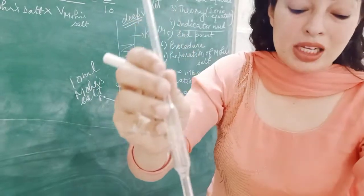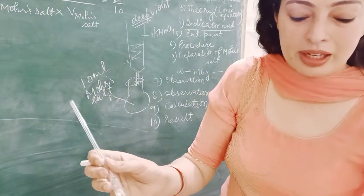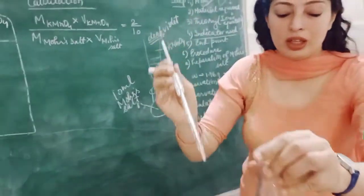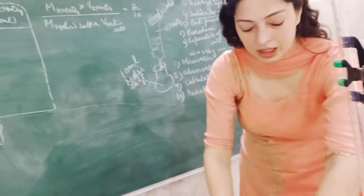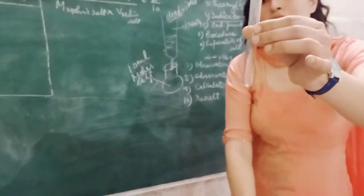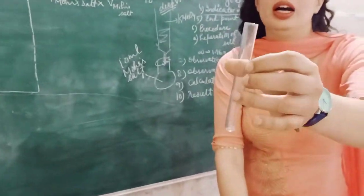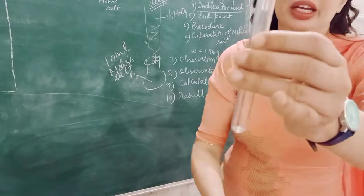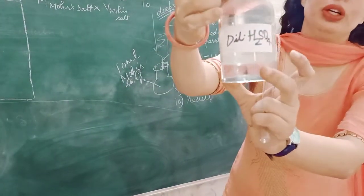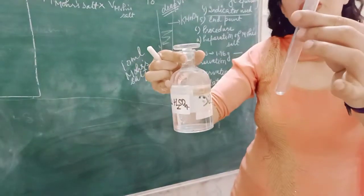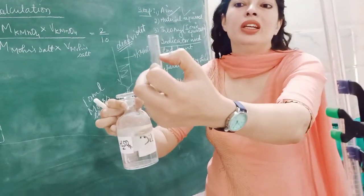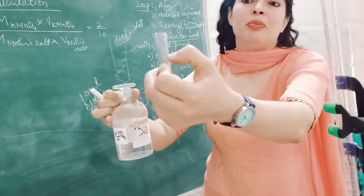We will transfer the liquid to the conical flask. You will transfer 10 ml of Mohr salt to this flask. After that, with the help of a test tube, you will add dilute sulfuric acid — this is called dilute sulfuric acid.